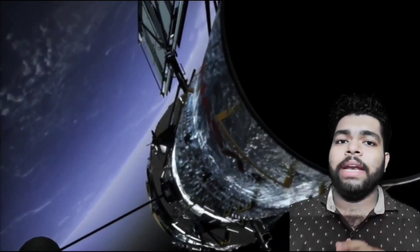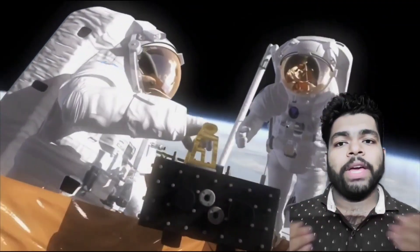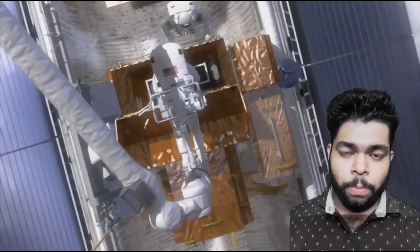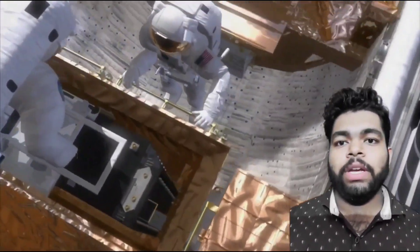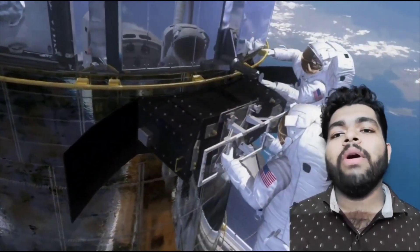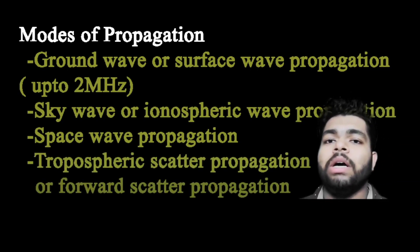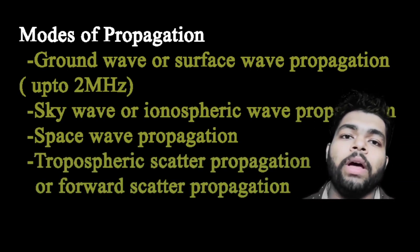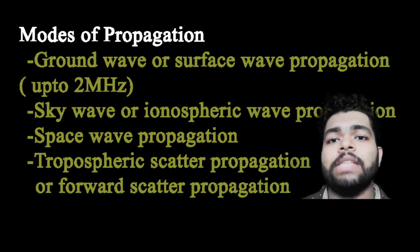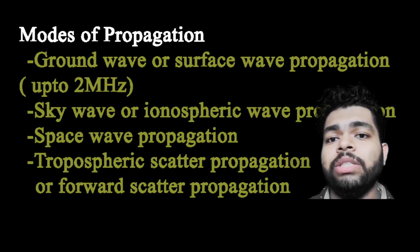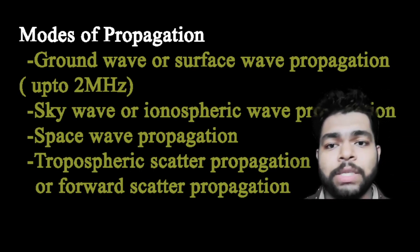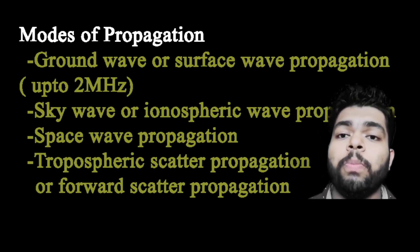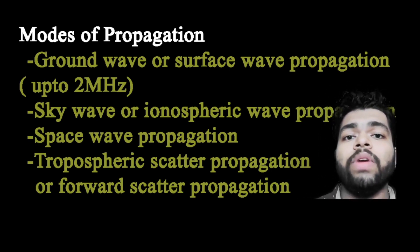Modes of radio wave propagation depend upon several factors like frequency of operation and distance between transmitting and receiving antennas. Some of the modes of propagation are: ground wave or surface wave, sky wave or ionospheric wave propagation, space wave propagation, and tropospheric scatter or forward scatter propagation.